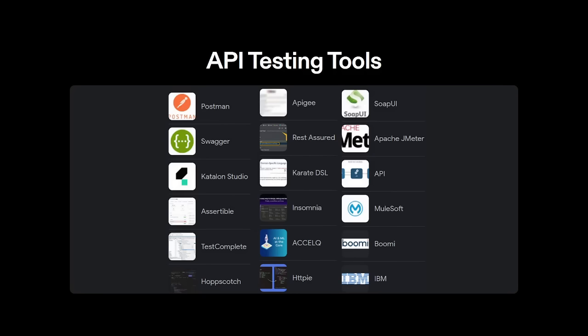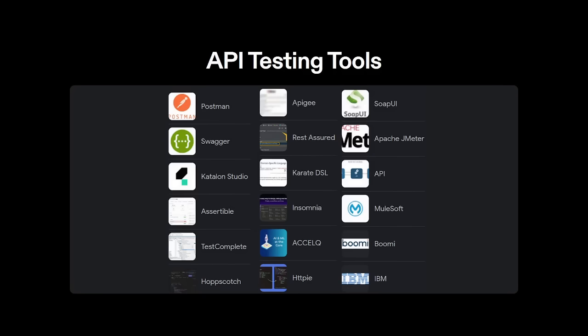Let's quickly look at some of the API tools we have, and these include Postman, Hopscotch, Swagger, Insomnia, BomiTest, Complete, Assertive — these are just a few tools available. If you are the type that loves to use Postman, you'll agree that you have to install the Postman software on your machine before you're able to use it, or use the web version.